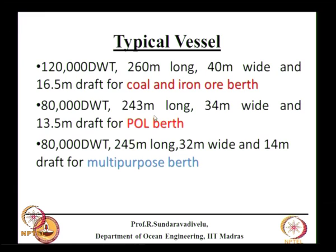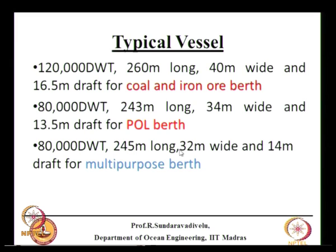We can have a VLCC (Very Large Crude Carrier) on a berth also, but I am not discussing that. For product export we have an 80,000 DWT vessel: length is 243 meters, width is 34 meters, and draft is 18.5 meters. The width of the berth is a controlling factor for cranes and other things for handling cargo. For an 80,000 DWT vessel, length is 245 meters, 32 meters wide and 14 meters draft. These dimensions are not constant — a given 80,000 DWT may have a longer length, longer width and lesser draft depending on the size of vessel operating in the region.